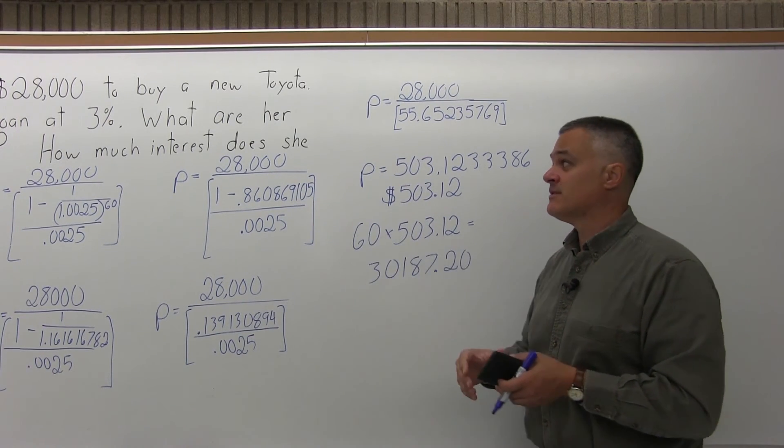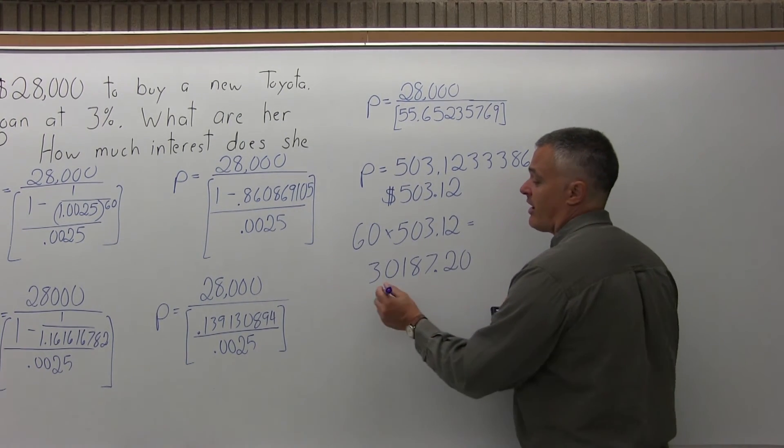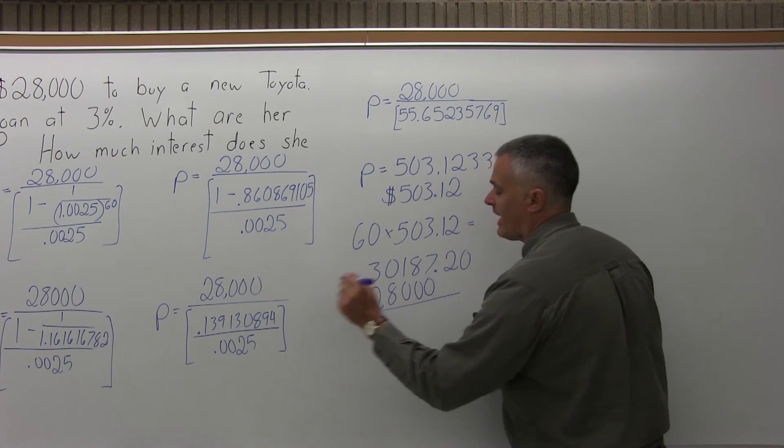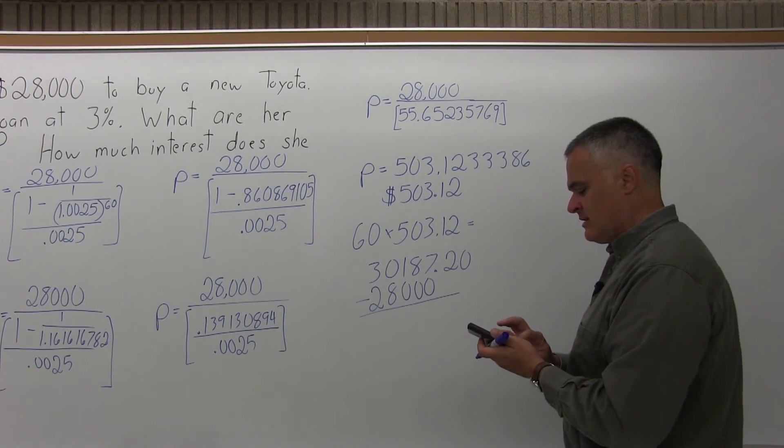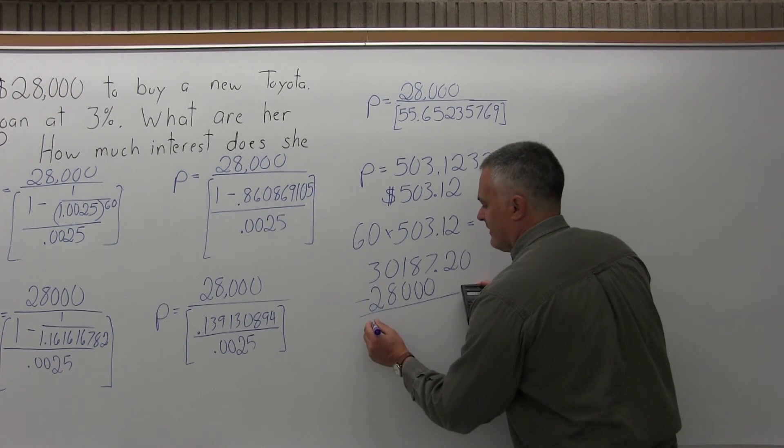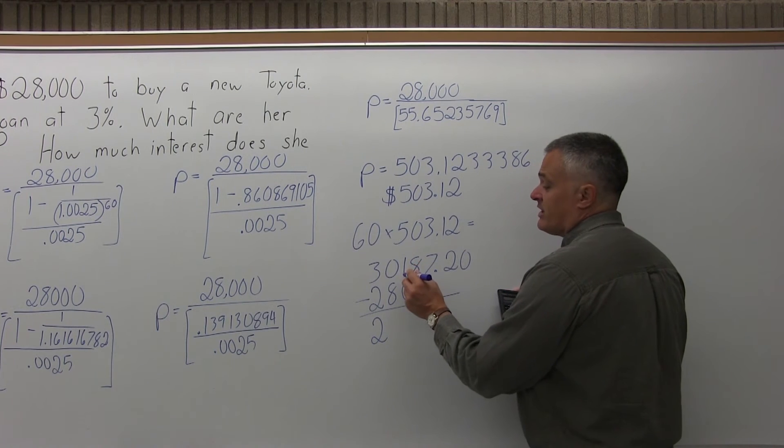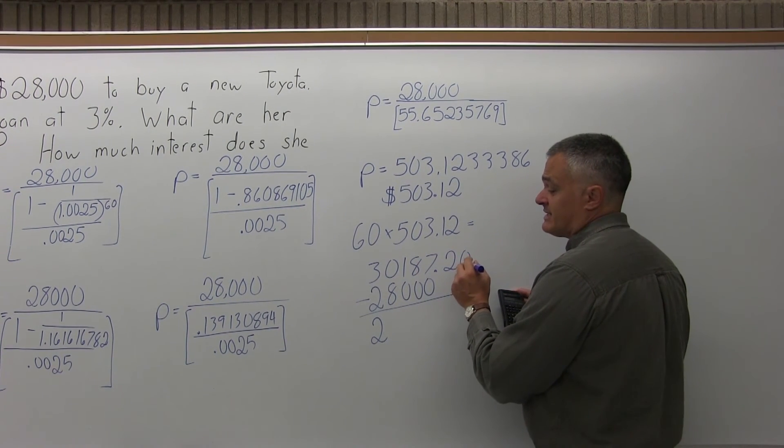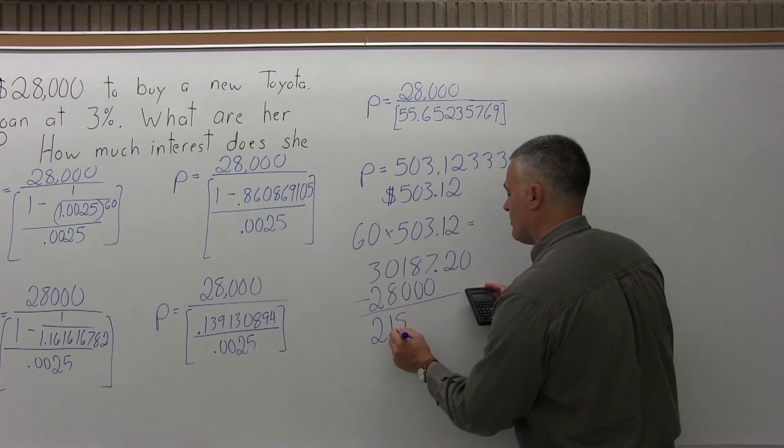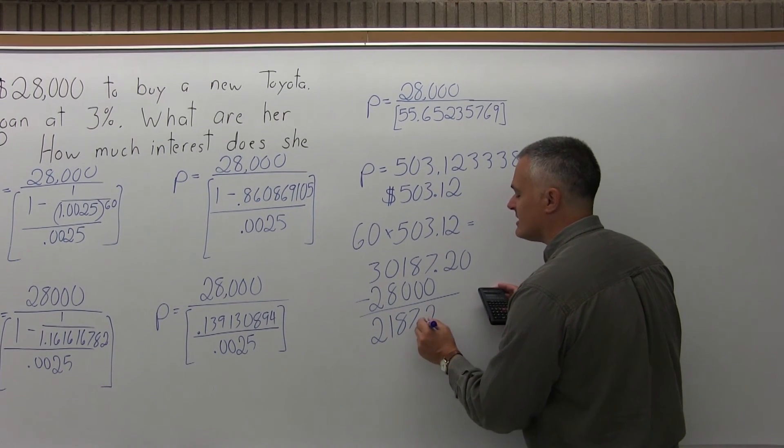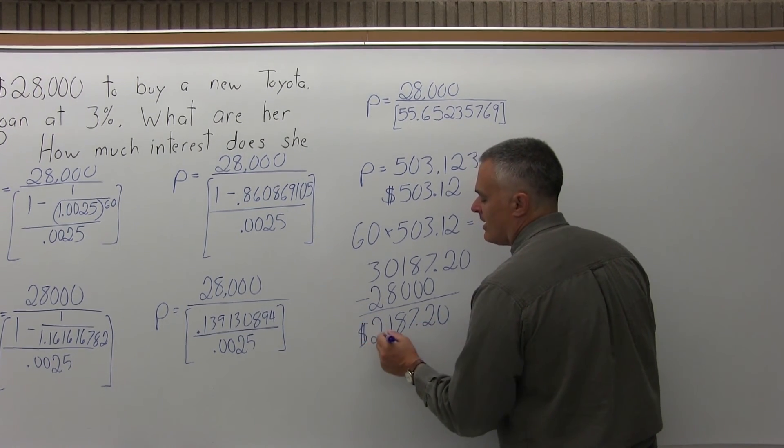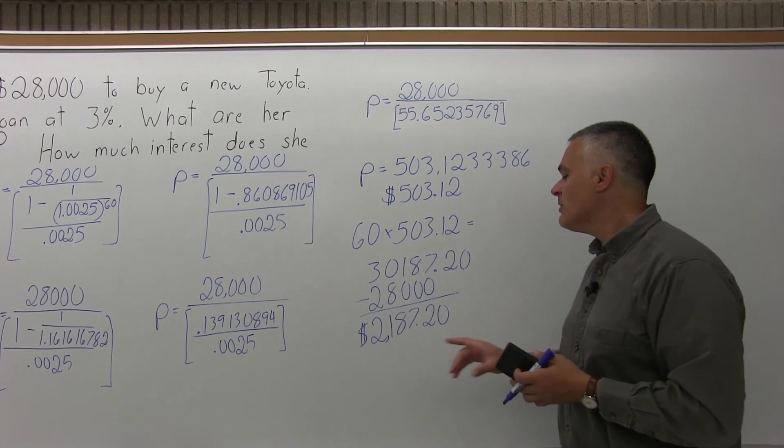So whoever gave the loan got paid back $30,187.20. But $28,000 of that went to the dealership that sold the car. So we can take off the $28,000. And that will tell us the interest. And so the difference between the $30,187.20 that Sandy pays back and the $28,000 that went for the car is $2,187.20. So the amount of interest paid is almost $2,200,